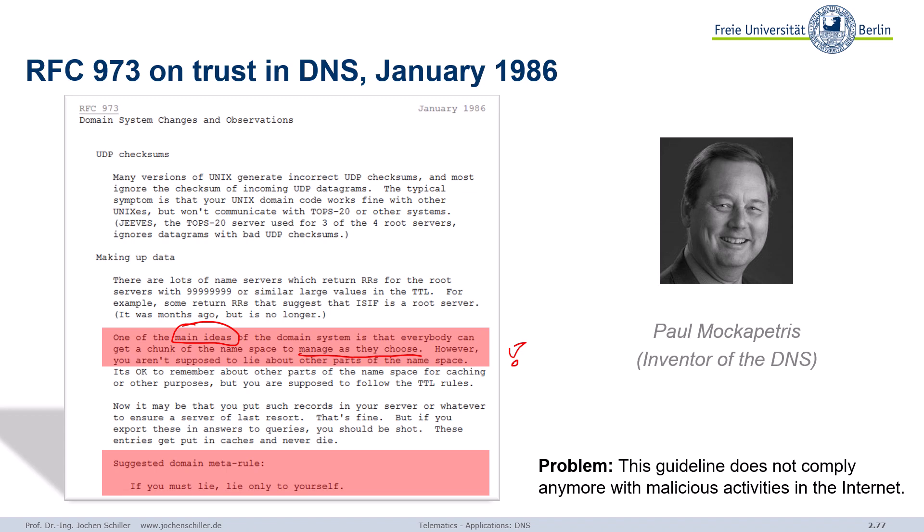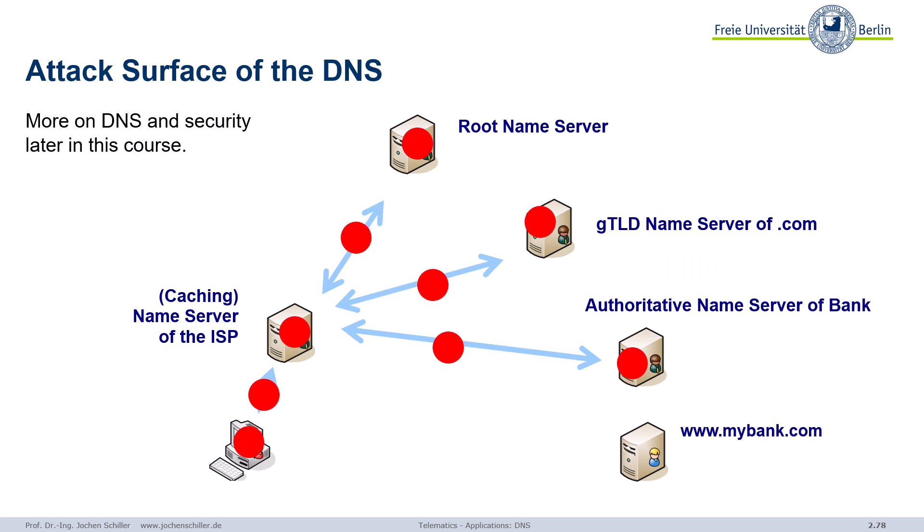We are now out of pure technology, right in the middle of economy and politics. Looking at DNS and security — there's more later in this course. We see all these red dots: we can attack many points in this game. We can attack the cache on our own host, attack requests and responses from host to nameserver, compromise nameservers, compromise generic top-level domains (more difficult), requests on the way to servers — root nameservers are much more difficult to compromise.